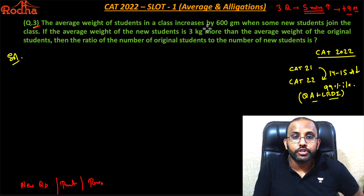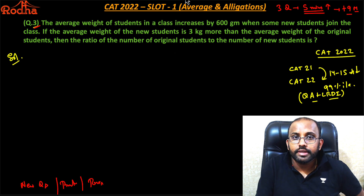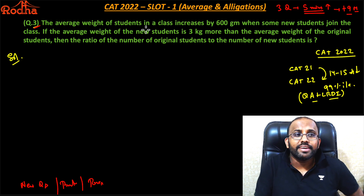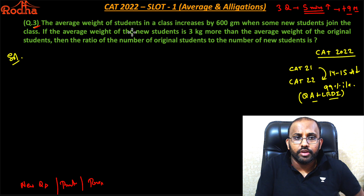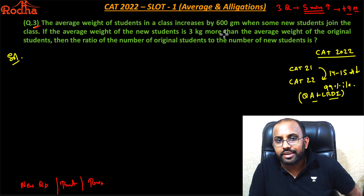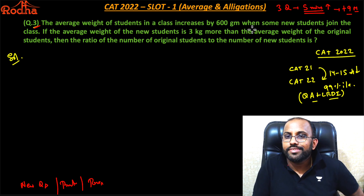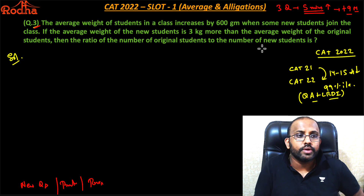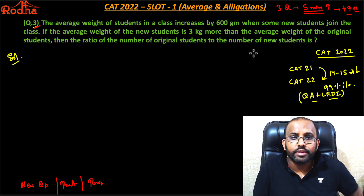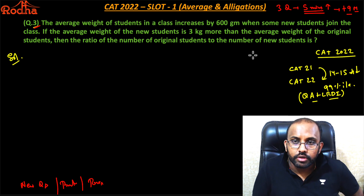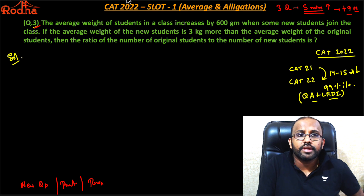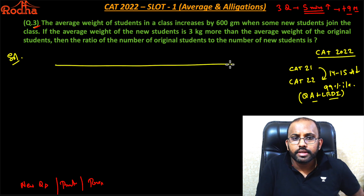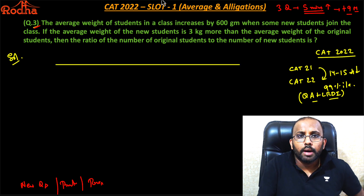Let's see this question. The weight of the students in a class increases by 600 grams when some new students join the class. If the average weight of the new students is 3 kg more than the average weight of the original students, then what is the ratio of the number of original students to the new students?